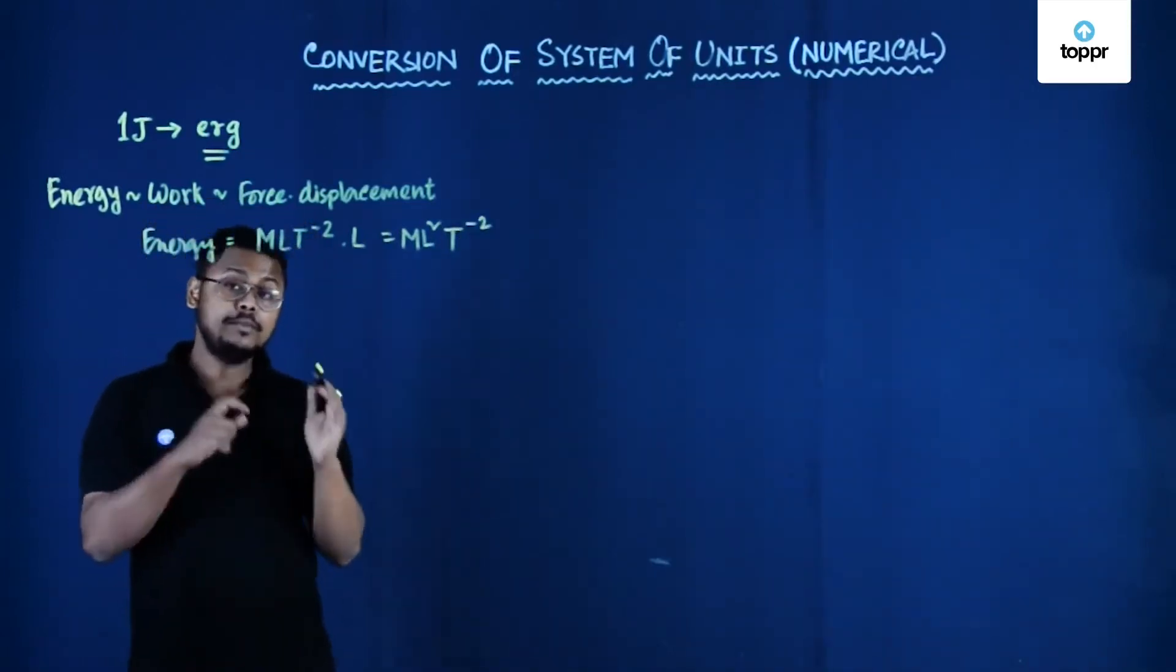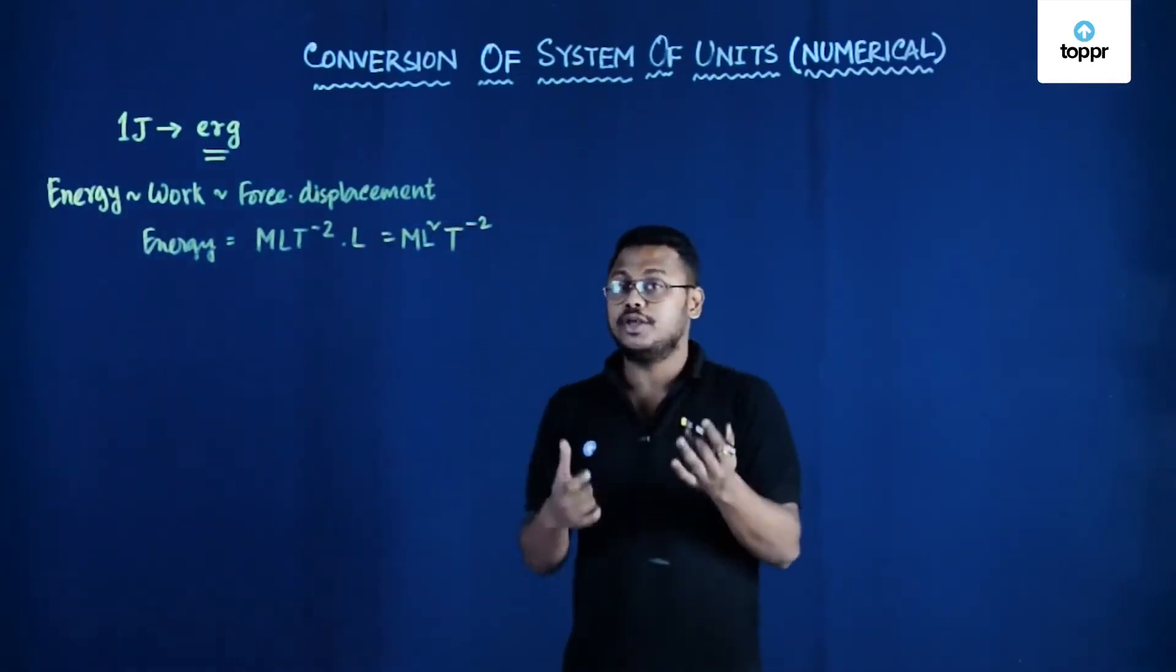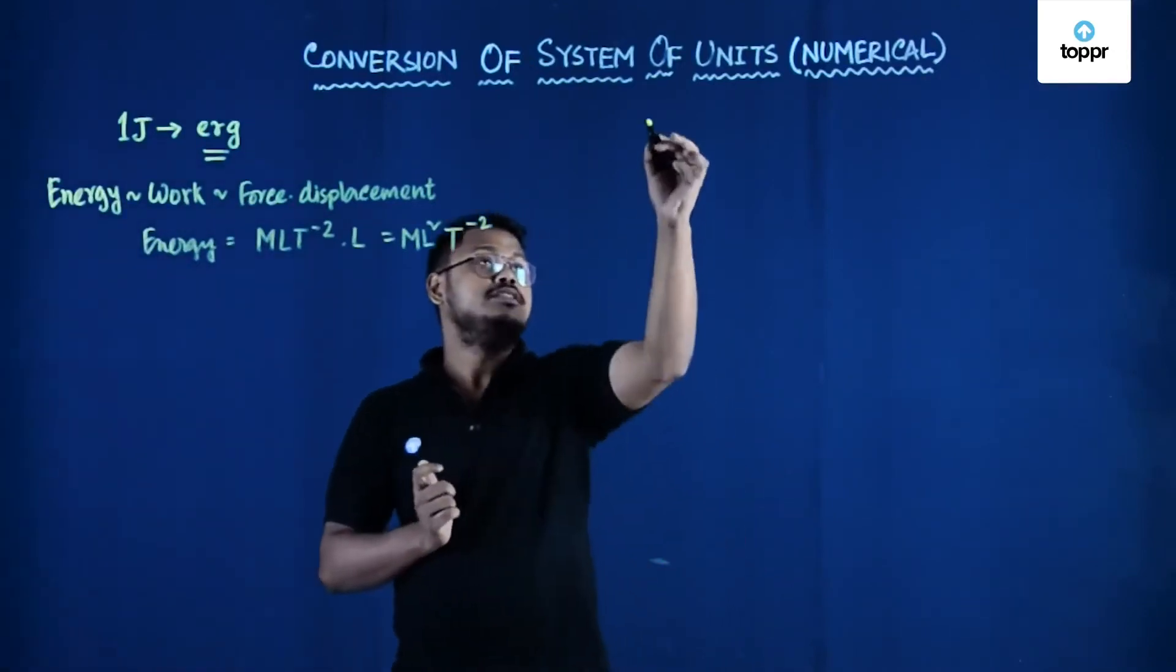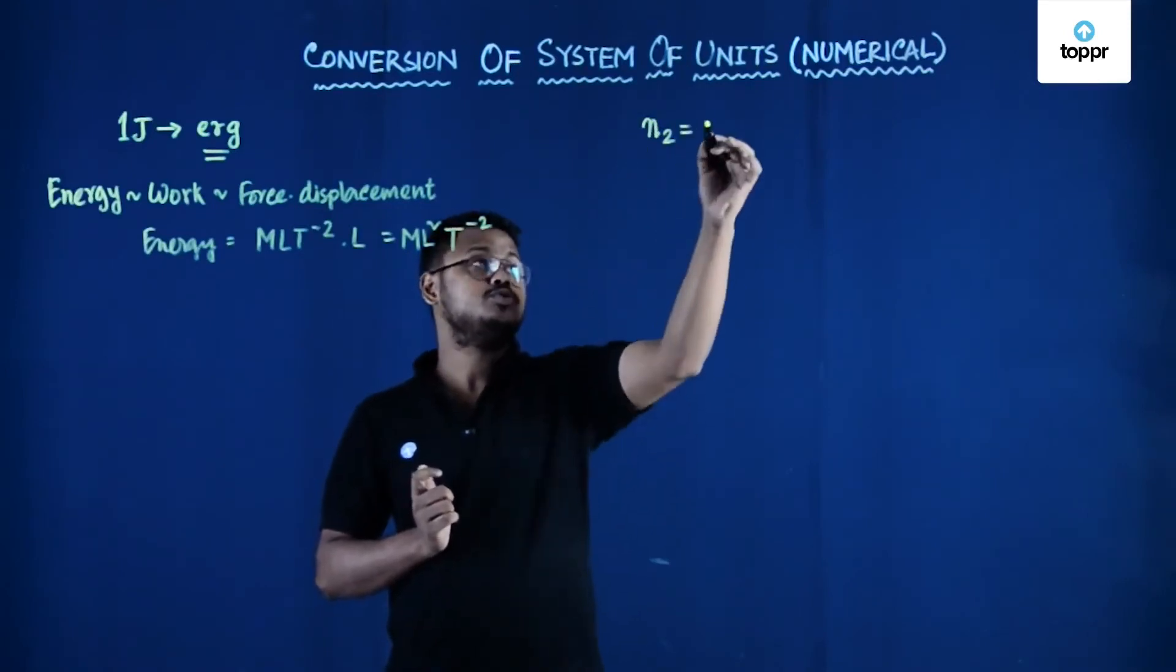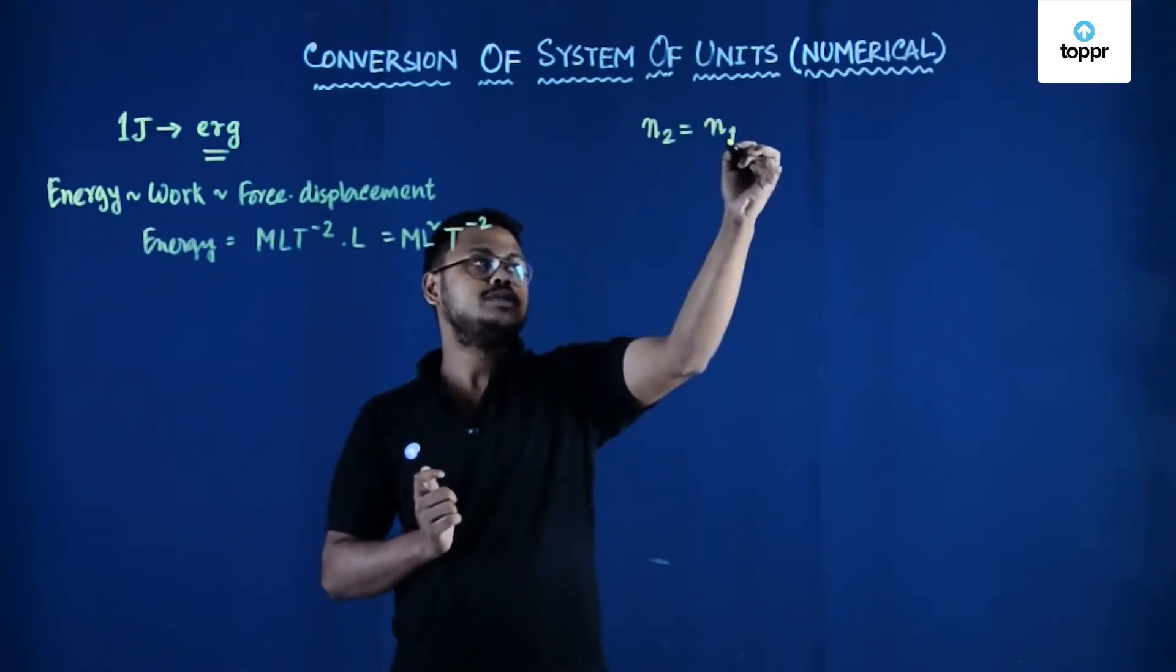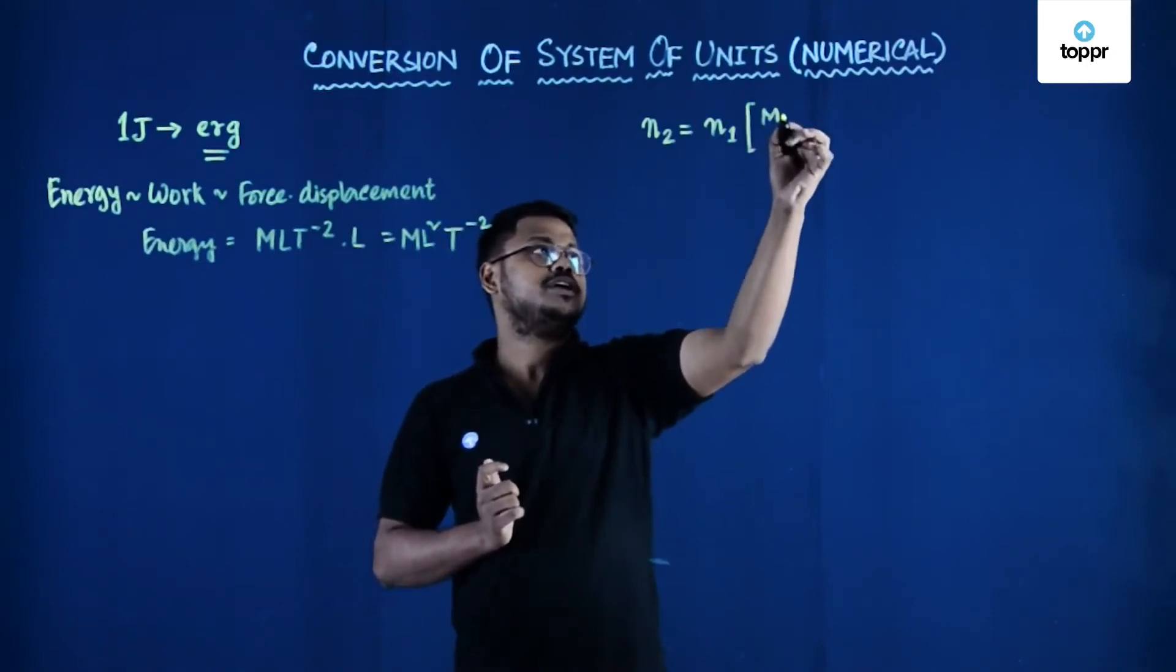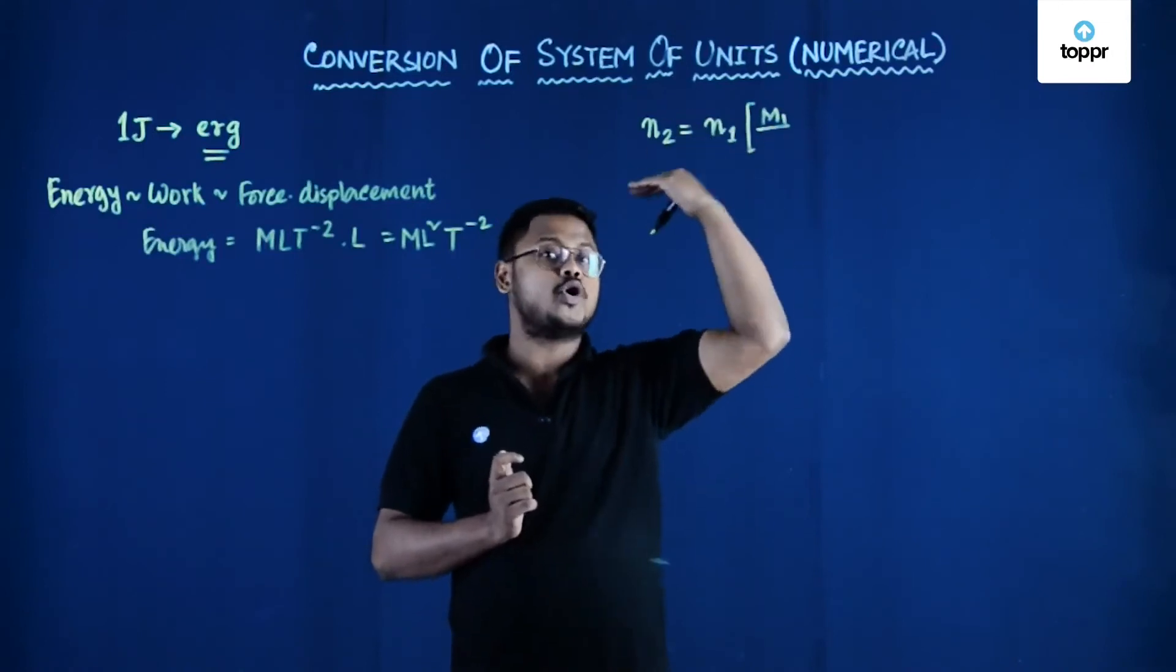If you remember from the formula that we have derived in our last session while finding the theory that how to convert from one system of unit to other, we can write the numerical value of the new system of unit is equal to the numerical value in old system of unit times the ratio of their fundamental quantities magnitude raised to the power of proper power.